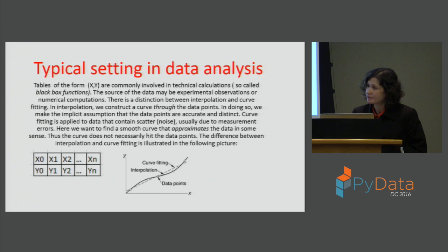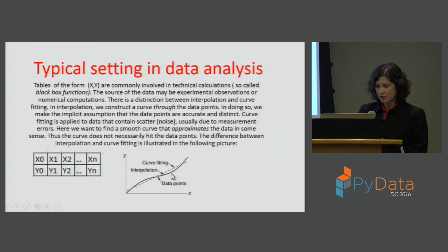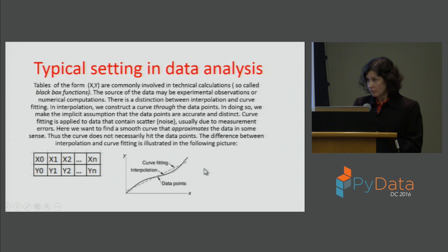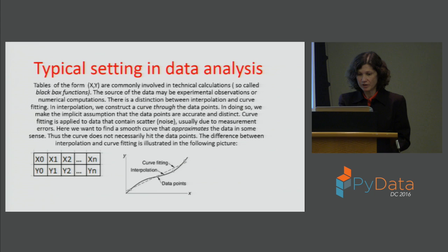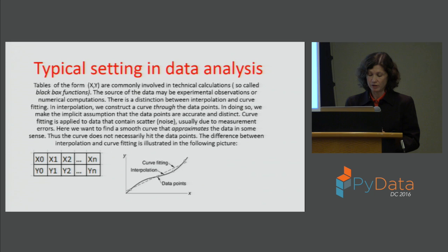The bold curve is an interpolation and the dotted curve is the regression. But this form of data could be used for other settings as well — this is a general framework for a black box function. You don't have an analytical form, just input and output. Sometimes it's multi-dimensional; in many cases it's just a simple form so you can depict it. Basically with this picture I just wanted to show how we define the data.